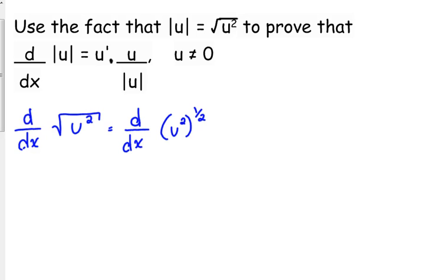When we take the derivative, bring down the exponent, keep the inside the same, subtract one from the exponent, multiply by the derivative of what's in the inside. And we're assuming that u is an expression, so we need to multiply by the derivative of that expression as well.